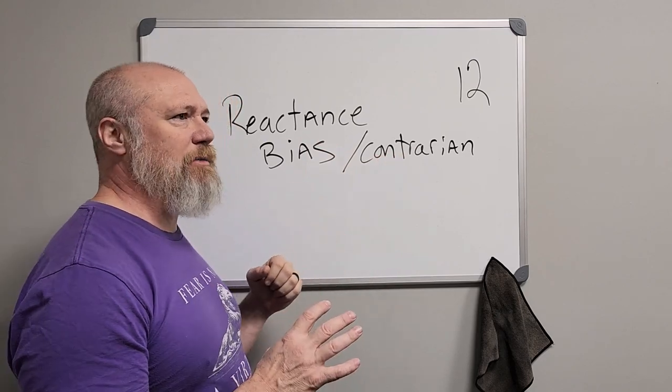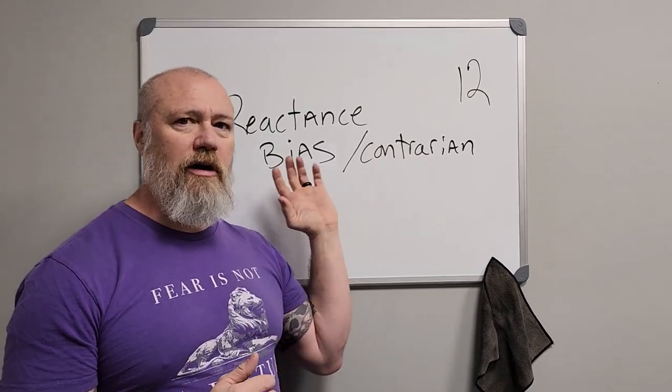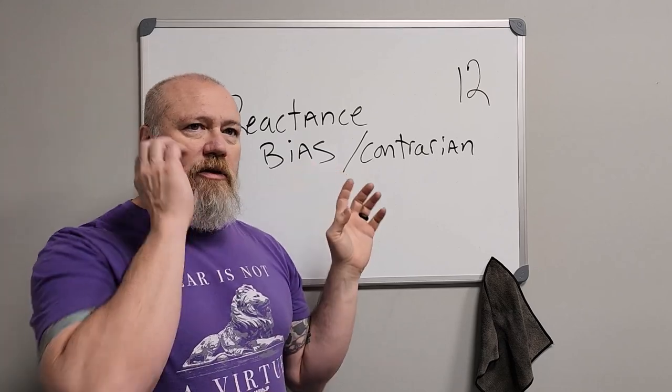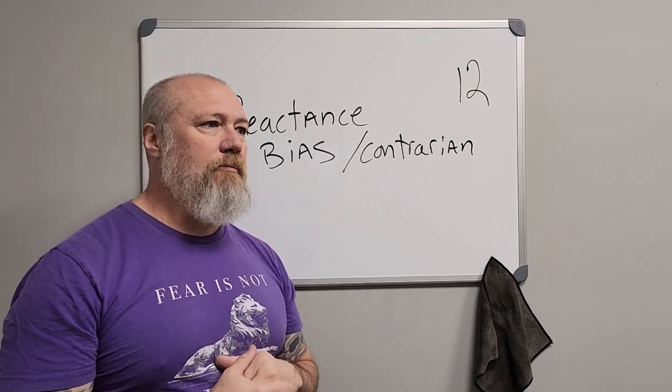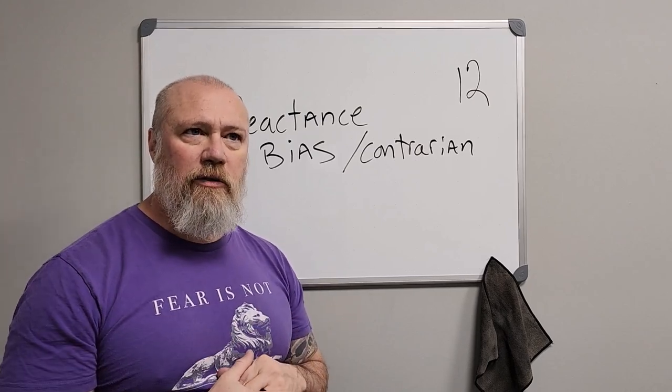You don't want to overcompensate and do the exact opposite just because you're caught up in this bias. This is very common in adults who had overly authoritative or rigid parents when they were younger and developed a reactance bias, feeling like they're being told what to do.